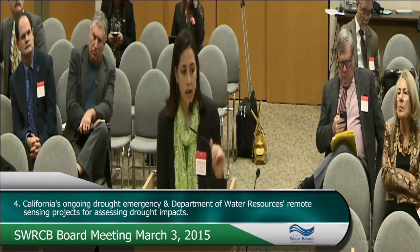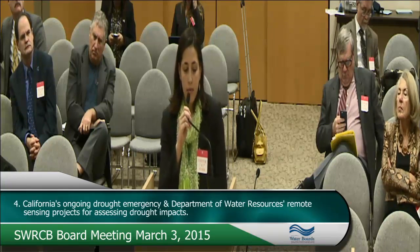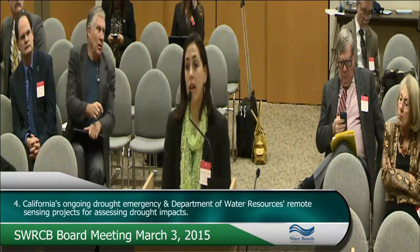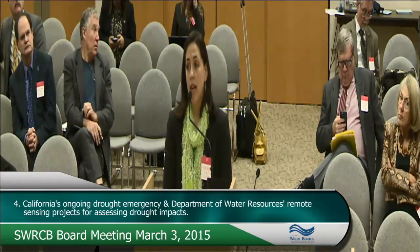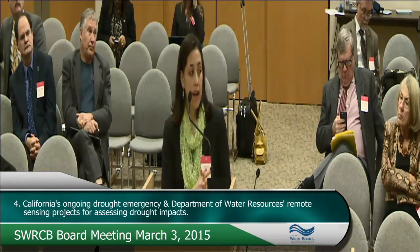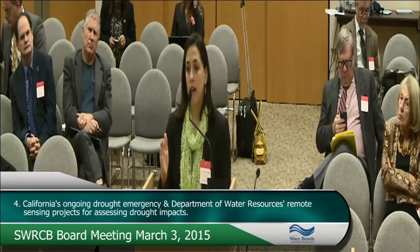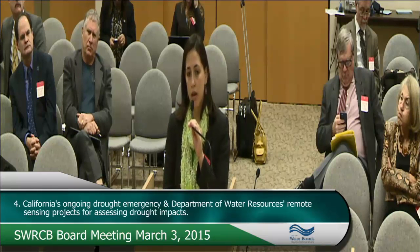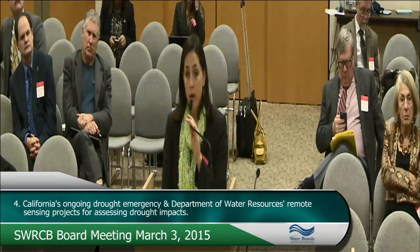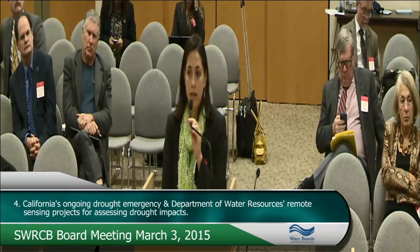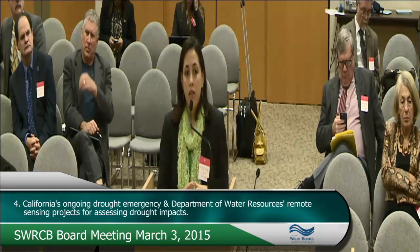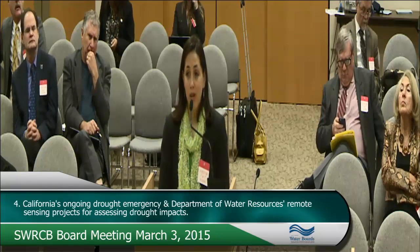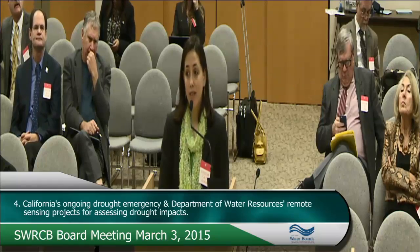In addition, working with the state board's drinking water program and very small systems that only have one or two sources, combining that information and working between agencies to see where water levels may be dropping, would be valuable. The drinking water program has been proactive with public water systems, but it would be great to use this opportunity to identify the most vulnerable populations so we can head off these issues proactively.